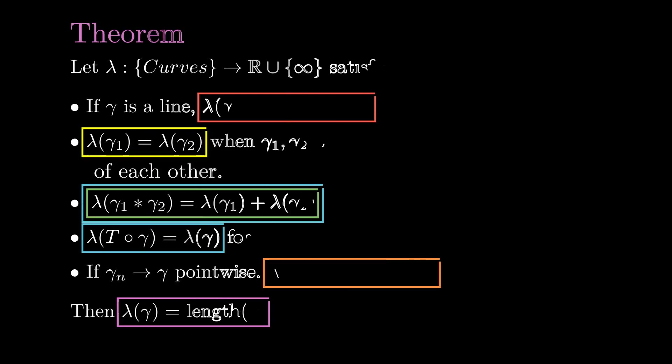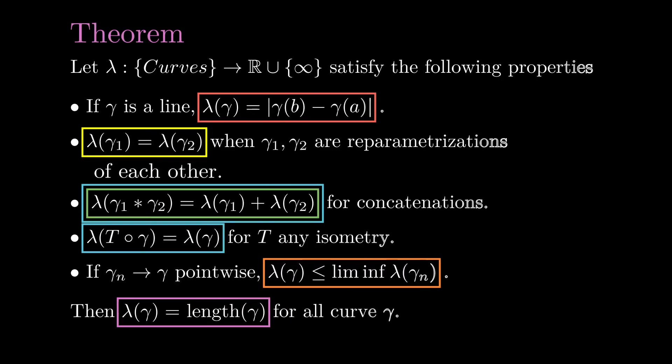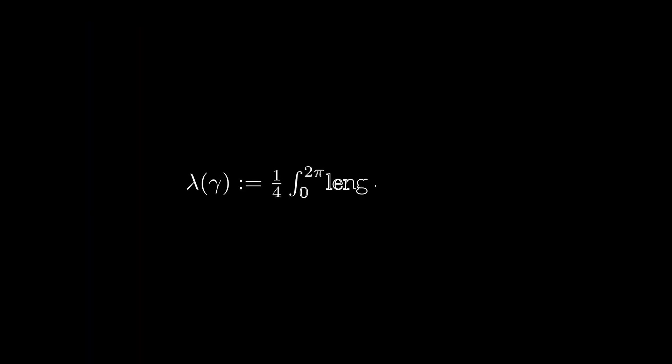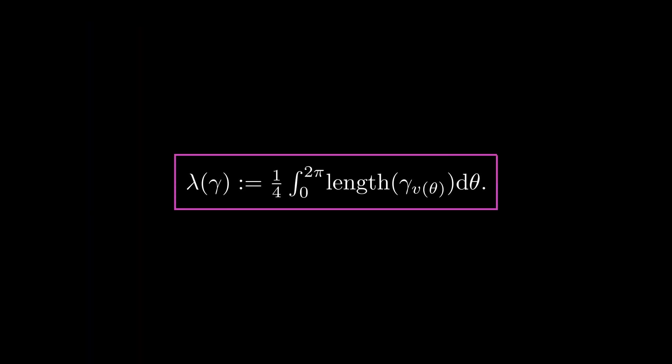To prove the Crofton formula, we are going to use the theorem that characterizes the length functional. Recall that if a functional satisfies all the properties of the length functional, then it necessarily is the length functional. Our functional lambda is going to be the one that assigns to each curve the integral on the right-hand side of the Crofton formula.